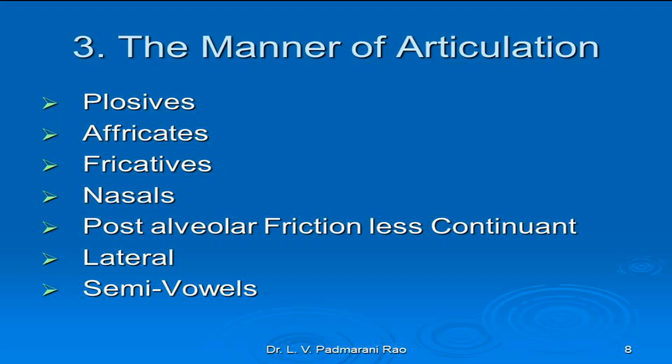The next is fricatives. In fricatives, the active articulators come very close to the passive articulator to form a very narrow gap. There is no closure at any point in the vocal tract as we find in plosives or affricates. The soft palate is raised to block the nasal passage. When the air passes through the narrow gap between the articulators it causes audible friction, and hence they are called fricatives. Fricatives are continuously accompanied by audible friction. There are nine fricatives in English.